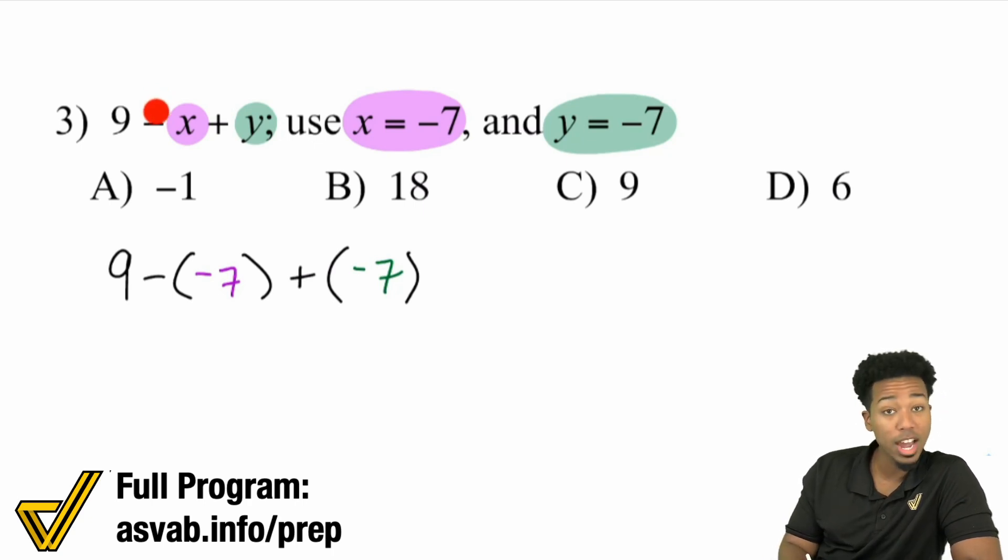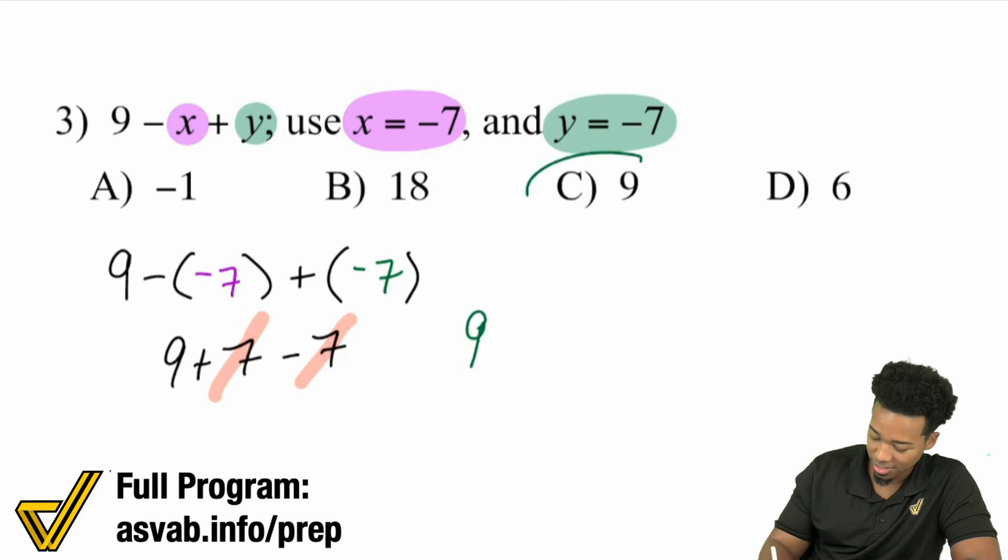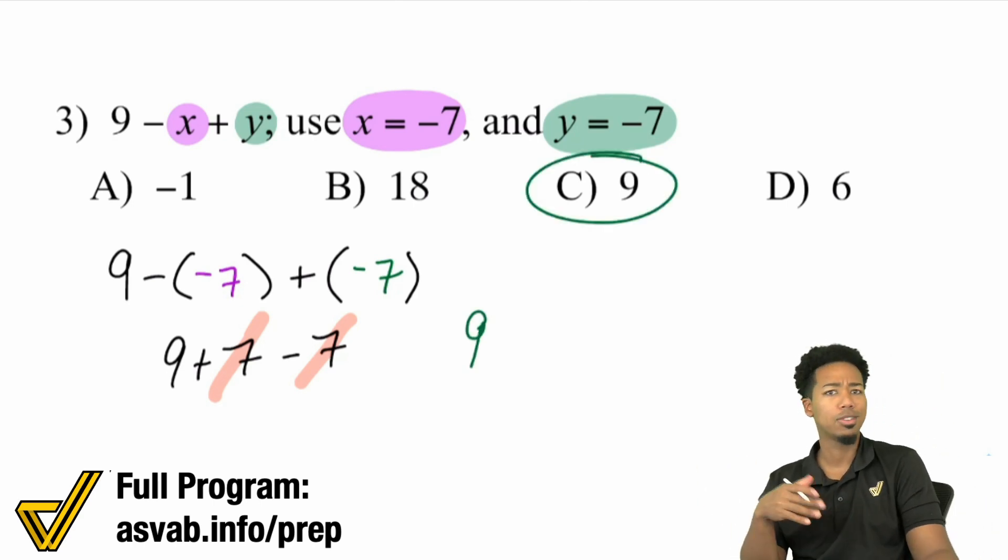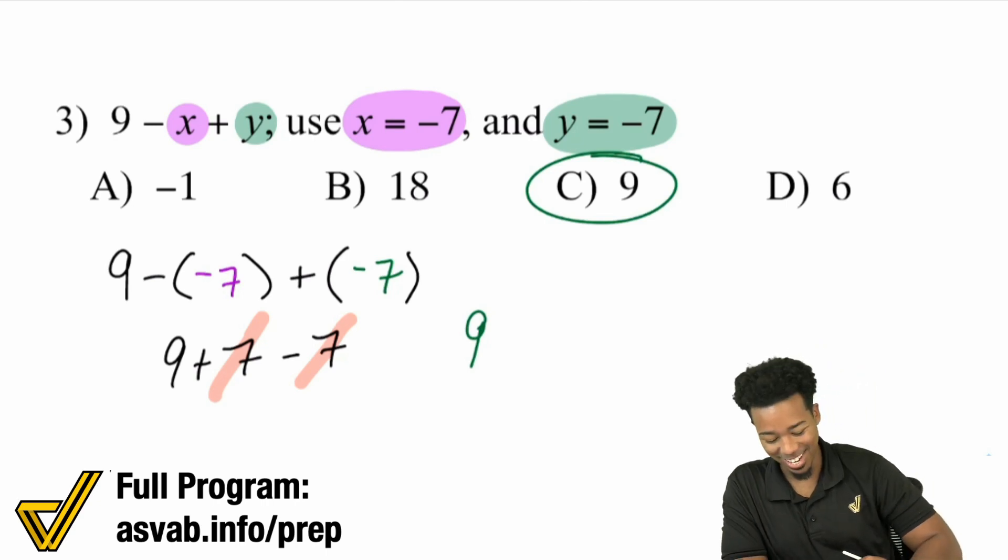Remember that when you are subtracting a negative, because that's what you see here, x happens to be a negative value, subtracting the -7. Minus a negative, that's going to end up being 9 + 7. And when you're adding a negative, that's the same thing as subtracting. If you notice, there's not really much else for you to do. All you really have to do, cancel those out right there. You end up with 9 and you're set. You can also go ahead and do 9 + 7, then take away 7. You'll still get there.